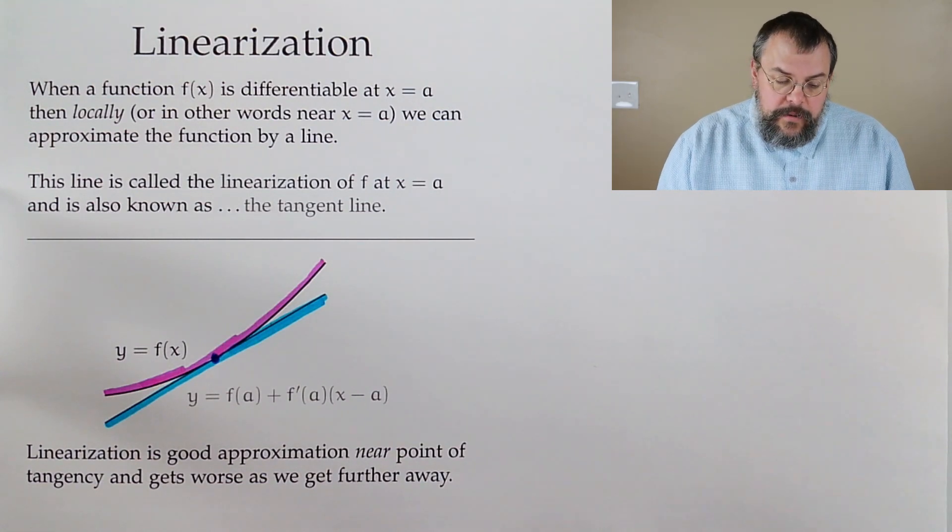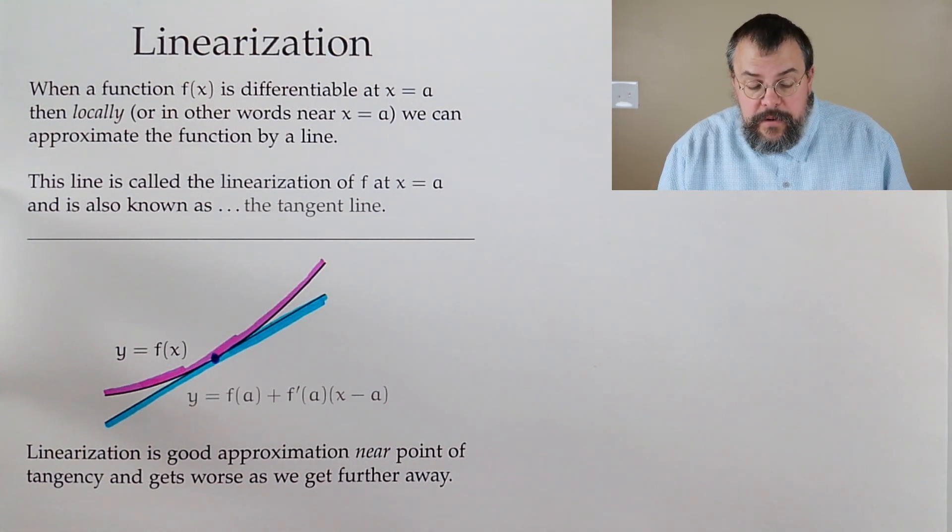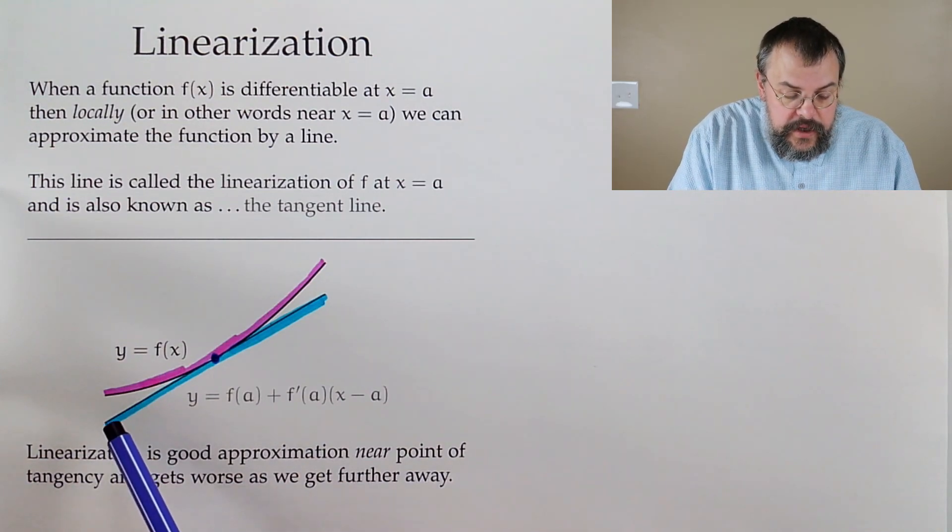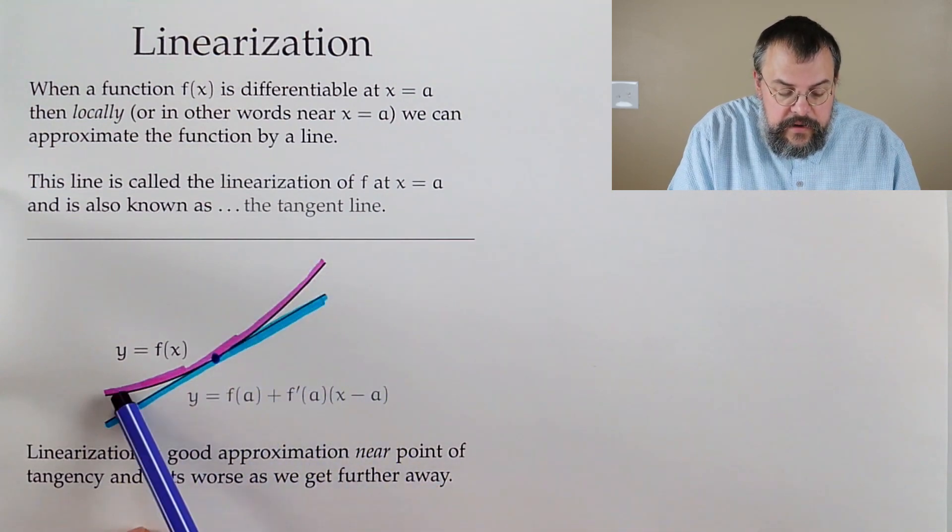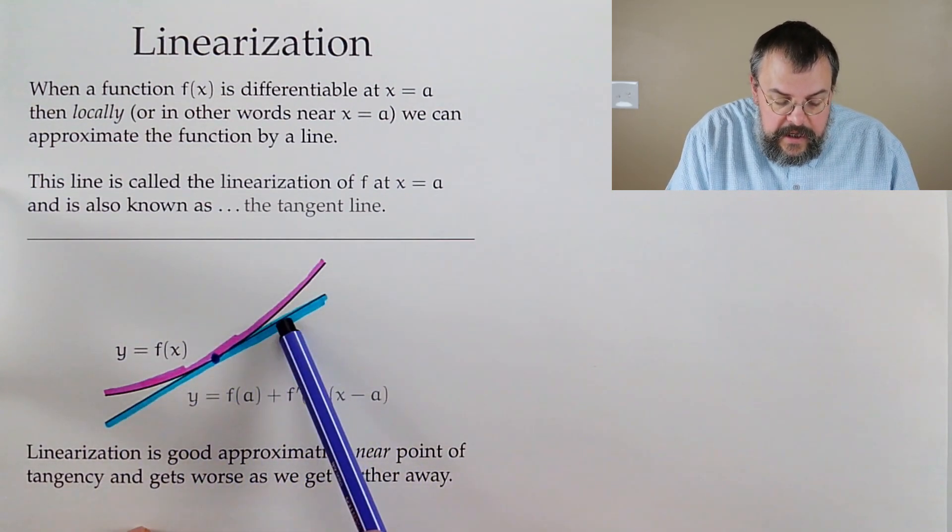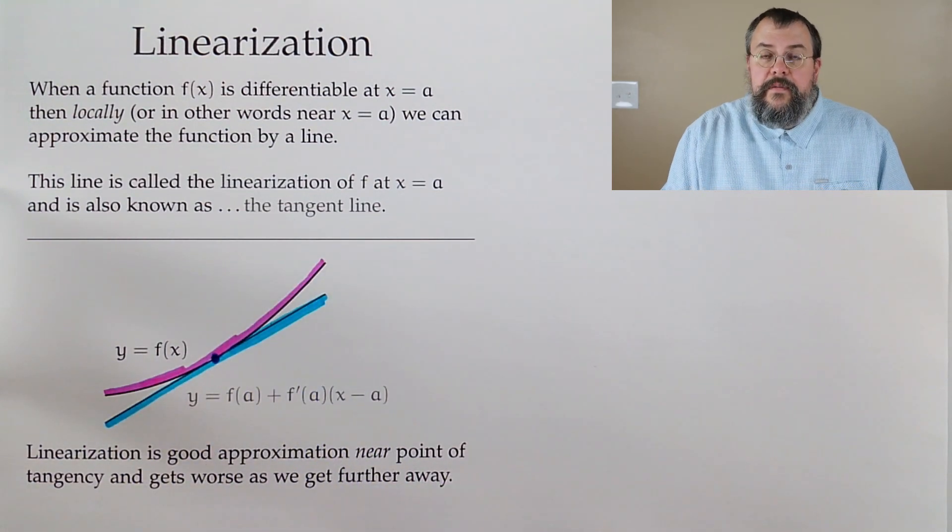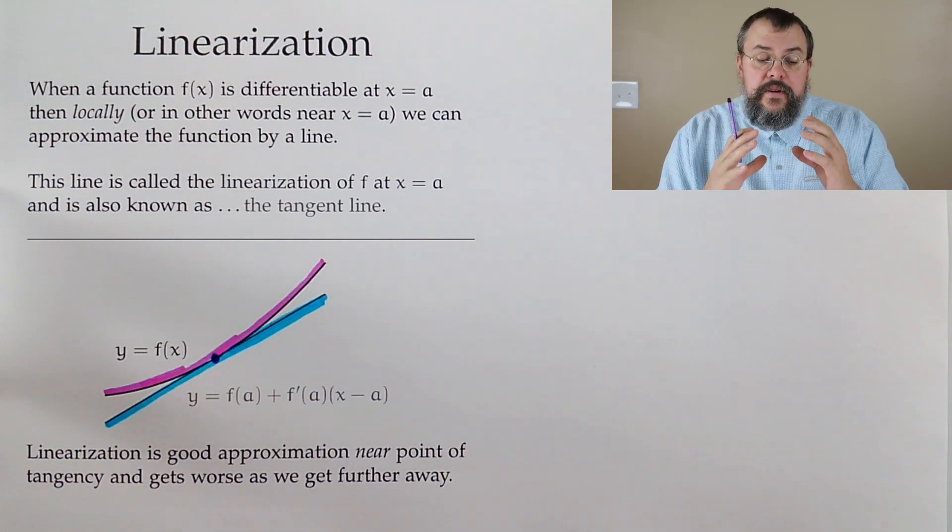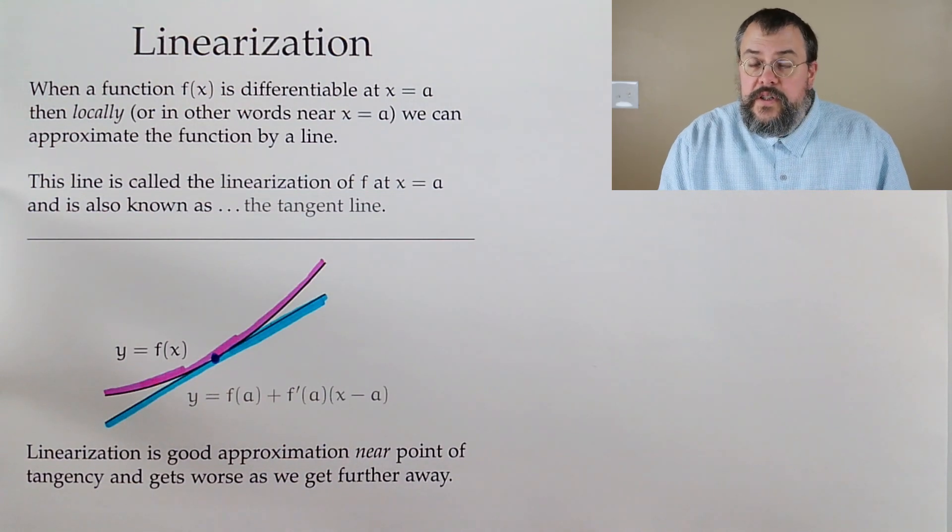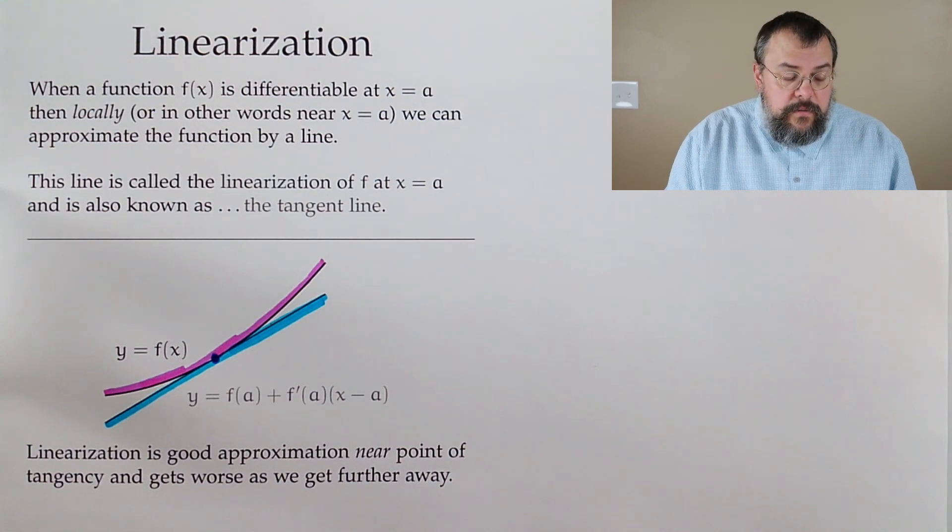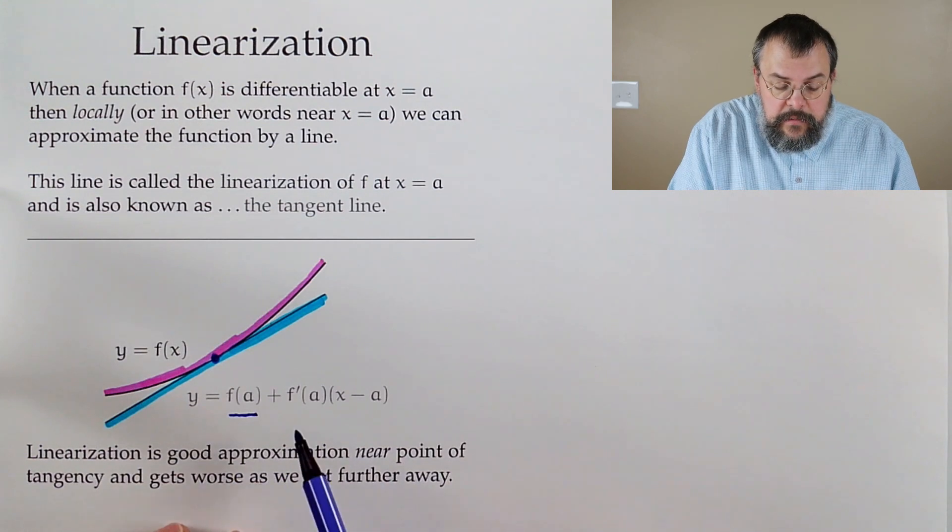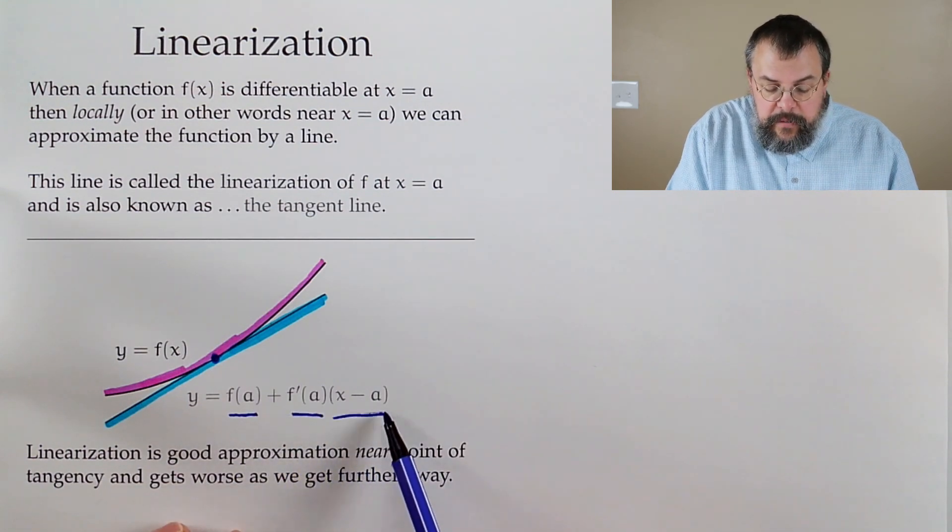Recall that when a function is differentiable, it really means locally it's flat. We zoom in, it's nice and flat. So you have this picture, and you have a function, and we say locally it looks like a line. This line is doing a very good job of behaving like the function near the point of tangency. The formula for the tangent line consists of the value of the function, plus the value of the derivative, times x minus a.